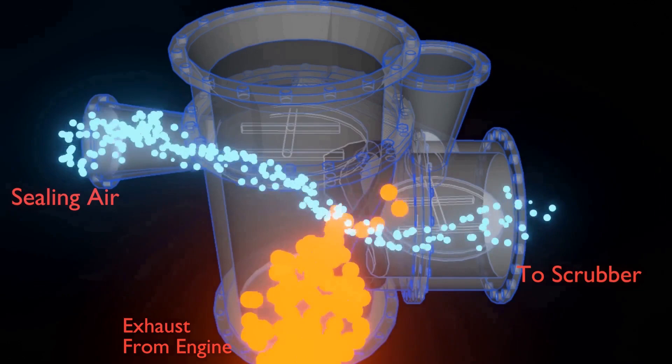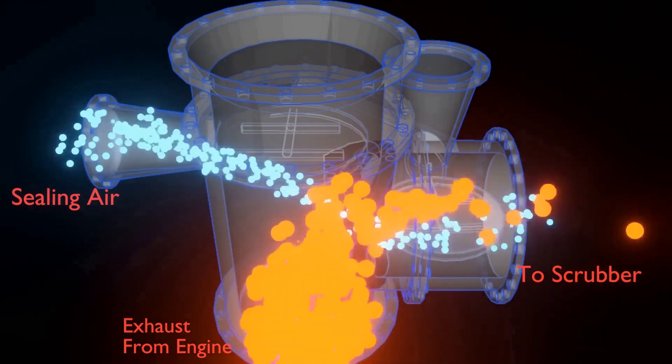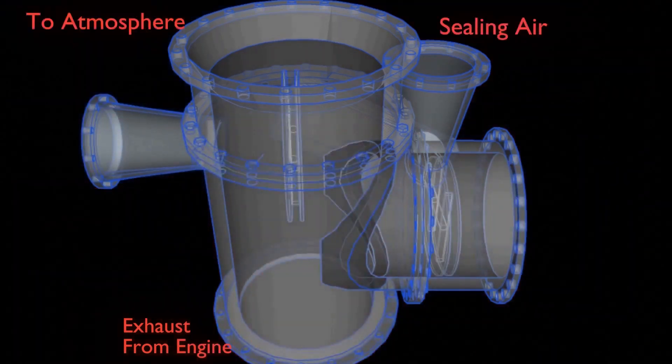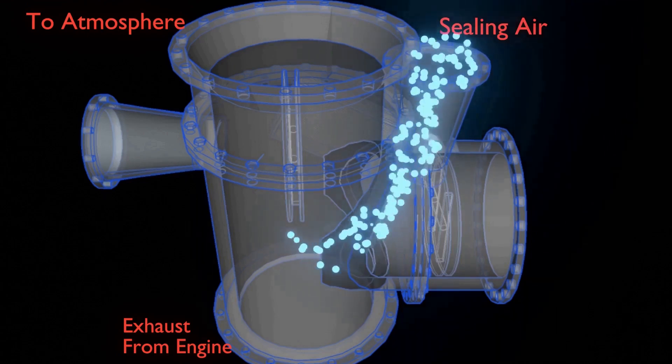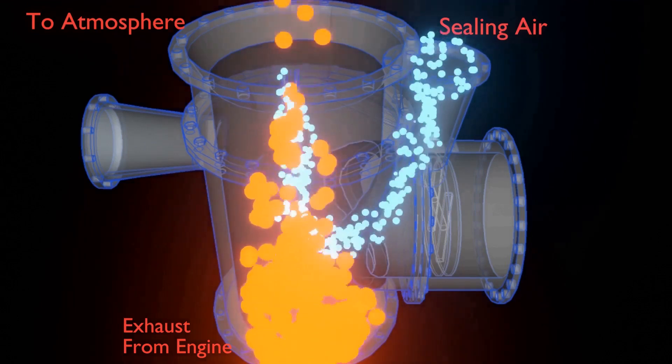Bypass damper valves will be opened instantly to bypass position in case of the following: 1. Scrubber shutdown initiated by instrumented safety function. 2. Emergency stop is activated. 3. Loss of instrument air or controller signal.